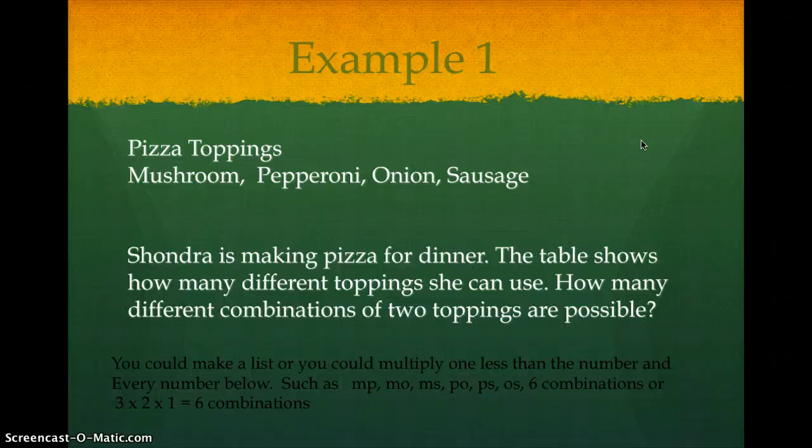Then I'm going to go to the pepperoni. I've already used pepperoni and mushrooms, so I won't have that one again. So I have pepperoni and onions or pepperoni and sausage. Then I'm going to go to the onion. I've already done onions and pepperoni, and onions and mushrooms, so I have onions with sausage. I've already done sausage with all three of the other ones, so we are done. So our list gives us six combinations.